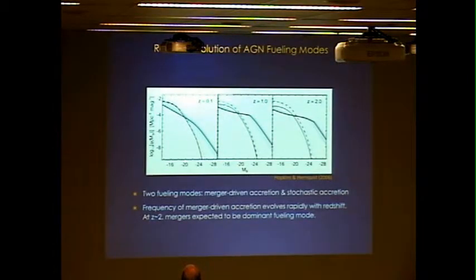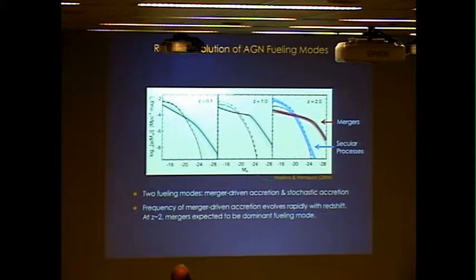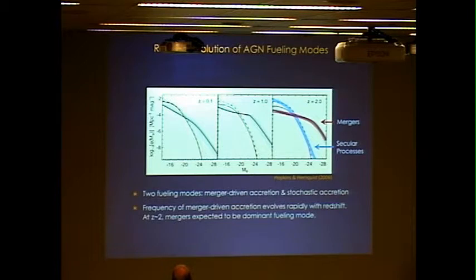Before CANDELS, the primary expectation was that by the time we got out to redshift two, the main thing triggering AGN activity — even moderate luminosity AGN activity — would be major mergers. This is from predictions such as the simulated luminosity function from Hopkins and Herquist 2006, where they predict luminosity functions for AGN fueled by mergers and by secular processes. These two luminosity functions are quite similar at redshift 0.1, but by redshift two the number density of AGN triggered by mergers substantially exceeds that triggered by secular processes.